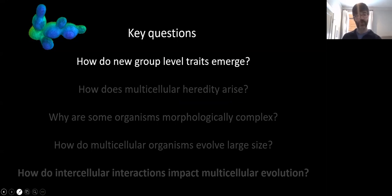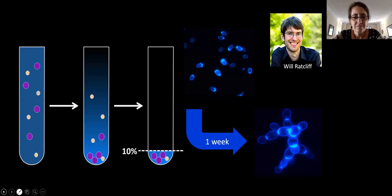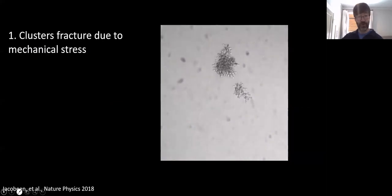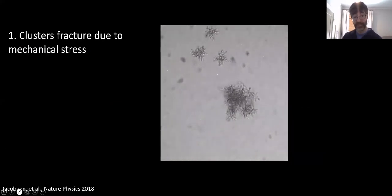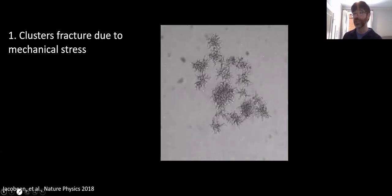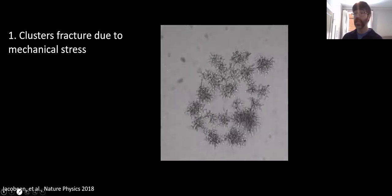Let's kick things off with how do new group level traits emerge. So we already discussed snowflake yeast, how they evolve, what they look like in general. With snowflake yeast, we were able to figure out that as they grow, they mechanically fracture. Stress builds up inside these clusters until one of these non-reformable bonds breaks, which then gives you two independently viable clusters. Rather than being a problem for snowflake yeast, this was essential to them becoming a multicellular group because it gives them a multicellular reproduction.